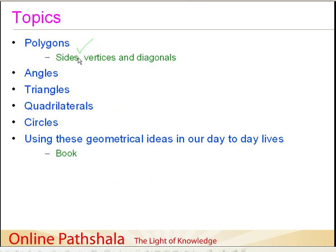We define what a polygon is and discuss the basic terminology associated with polygons: what we mean by sides of a polygon, what we mean by vertices of a polygon, and what we mean by the diagonals of a polygon — all understood using examples. Then we build upon our earlier knowledge to understand what we mean by an angle, when an angle is formed, and how an angle is represented.